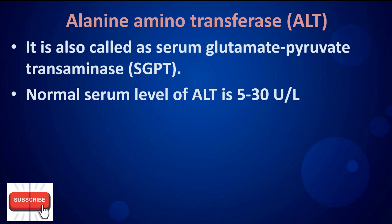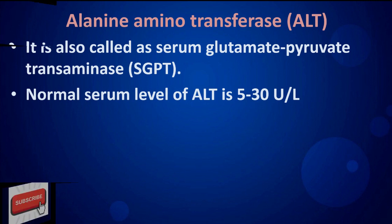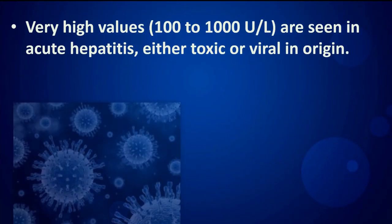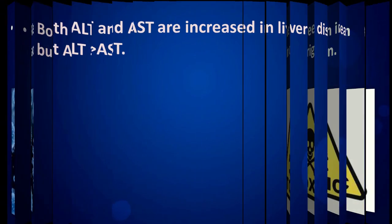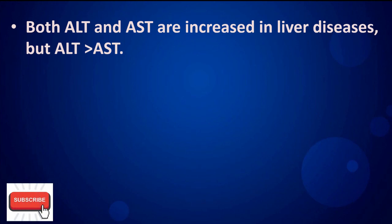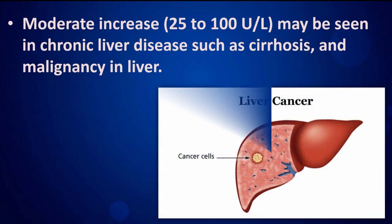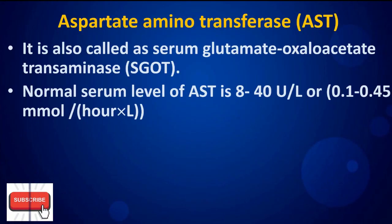Alanine aminotransferase (ALT) is also called serum glutamate pyruvate transaminase (SGPT). The normal serum level of ALT is 5 to 30 international units. Very high values are seen in acute hepatitis, either toxic or viral in origin. Both ALT and AST are increased in liver diseases, but ALT is increased more than AST. A moderate increase may be seen in chronic liver disease such as cirrhosis and malignancy in the liver.